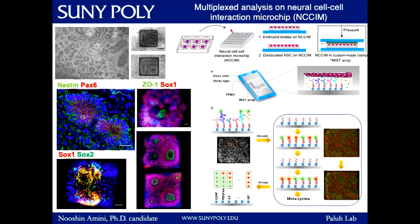Neural rosettes can differentiate to multiple types of neurons given the right signaling factors and have been used in studies for treatment of neurodegenerative diseases like Alzheimer's and Parkinson's. One issue is that each lab uses them at different conditions — some as dissociated single cells, others as whole rosettes or aggregates. No one has really looked at the difference in cytokine production. These cytokines can activate or inhibit specific signaling pathways in a cell, determining the fate of the cells. We seeded them on a PDMS microchip with an antibody array.